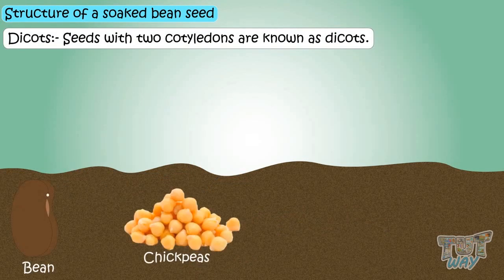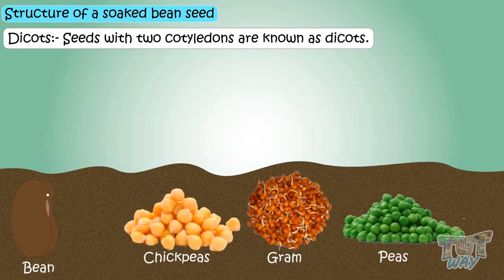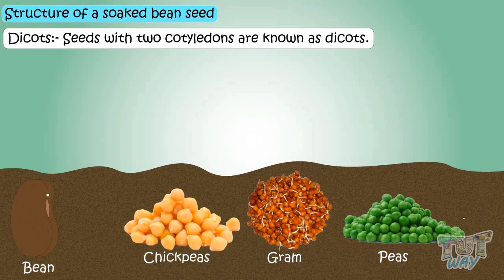Beans, chickpeas, gram, and peas have two cotyledons and are known as dicots.